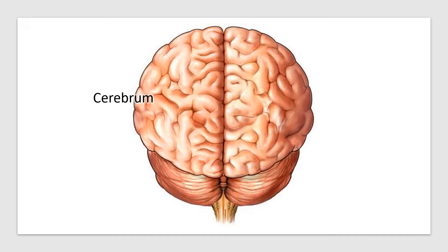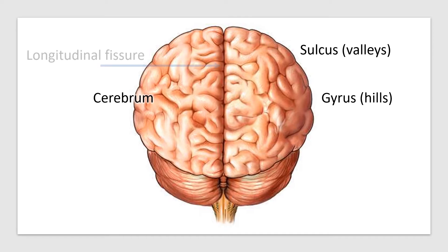On the cerebrum, all of the valleys are called sulci and all of the hills are called gyri. Separating the left and right halves of the cerebrum is the longitudinal fissure.